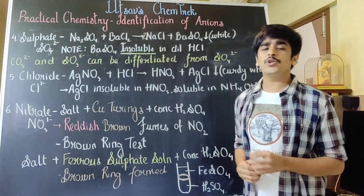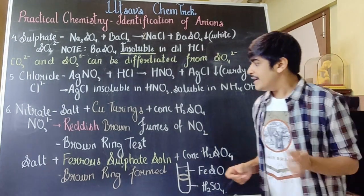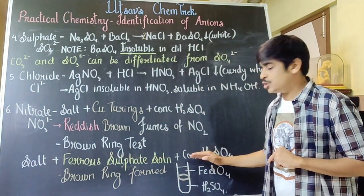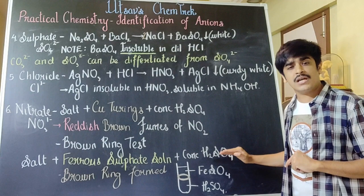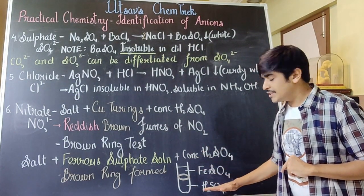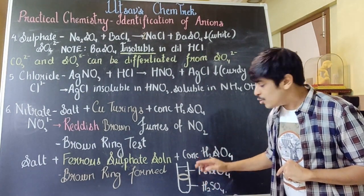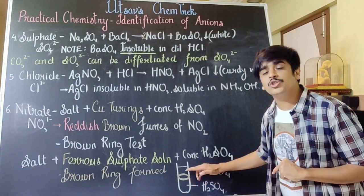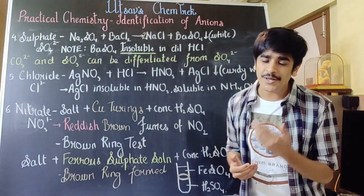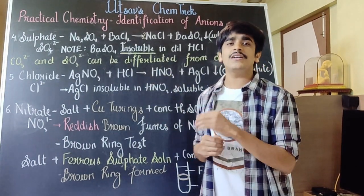One more thing is possible — you all can carry out the brown ring test. To carry out the brown ring test, take the salt, add freshly prepared ferrous sulfate solution to it, and by the sides of the test tube add a few drops of concentrated sulfuric acid. In the test tube there will be a total of two solutions: concentrated sulfuric acid and ferrous sulfate. At their junction — when the first solution ends and the second solution begins — you'll be getting the formation of a beautiful brown ring. The moment the brown ring appears, you know the salt contains the nitrate radical.